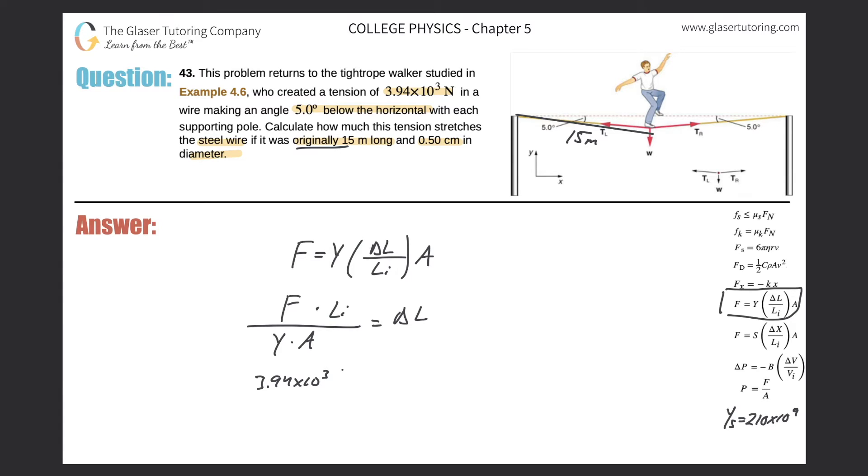Multiplied by the initial length, they told us it's 15 meters, divided by Young's modulus. I wrote down the value on the right side for steel - it's 210 times 10 to the ninth, multiplied by the cross-sectional area.